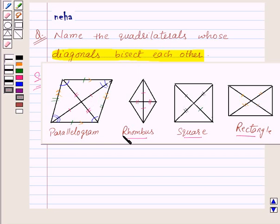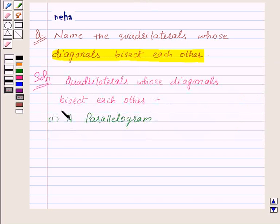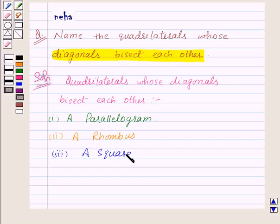Thus our second, third, and fourth quadrilaterals whose diagonals bisect each other are a rhombus, a square, and the fourth one is a rectangle.